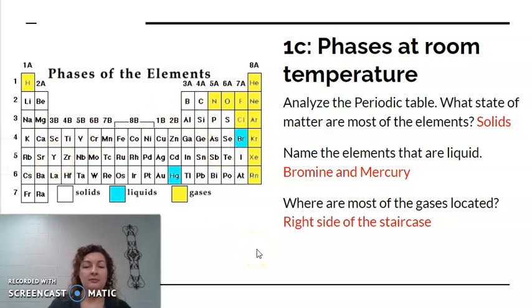Name the two elements that are liquid. There's only two elements on the periodic table that are liquid at room temperature. Remember you guys, you can make any element a solid, liquid, or gas that you want to if you get the right temperature range. But at room temperature, only two are liquid and that's going to be bromine right here and mercury. Where are most of the gases located? If you look, the majority of the gases are on the right-hand side. I put right-hand side of the staircase and I'm going to show you what that means in a minute. But this is mostly the right-hand side with the exception of hydrogen over here.